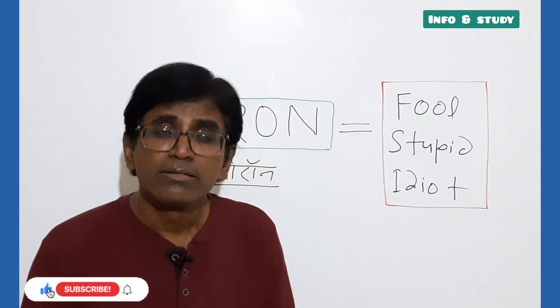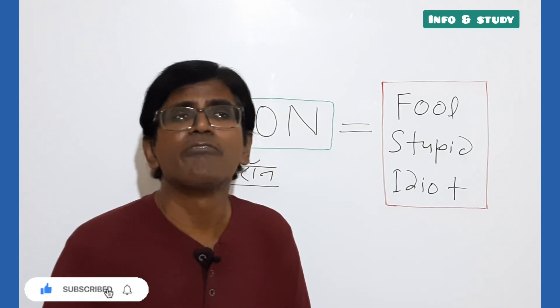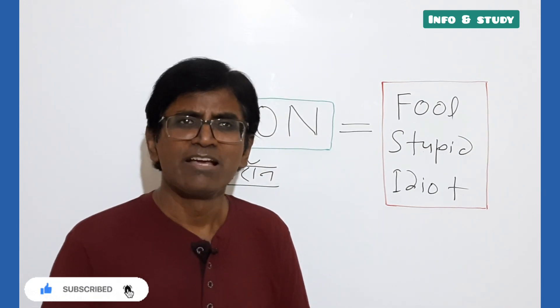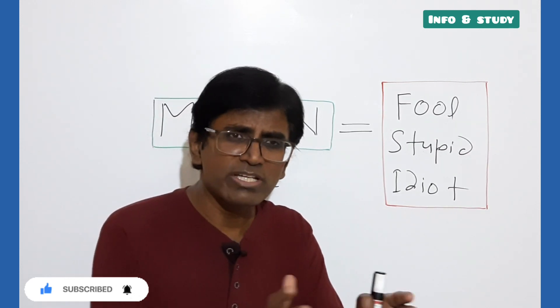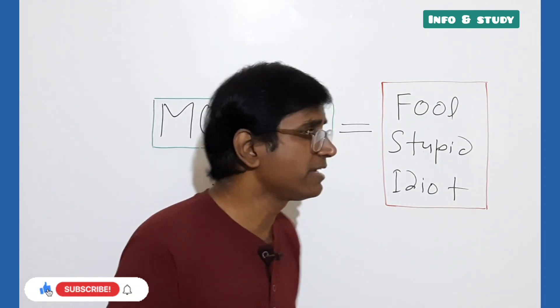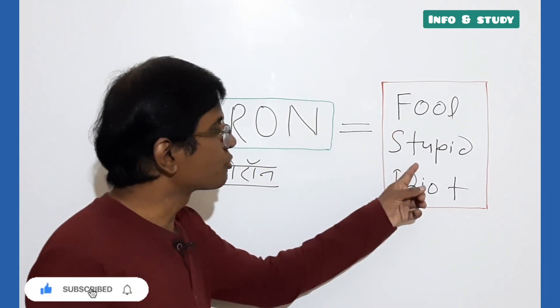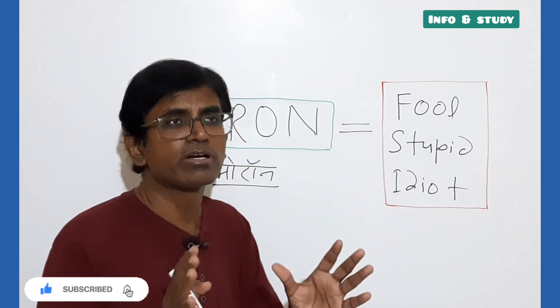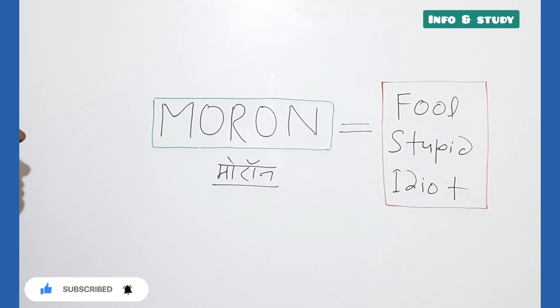A moron can't understand the value of education. Koi murk vyakti kya nahi samajh sakta? Education ke value ko kya samjhega jo murk vyakti hai? To dhyan rakhiyega, moron ka arth hota hai fool, stupid, idiot: murk, bevakuf, mand buddhi. Aap ek baar screenshot le sakte hain.